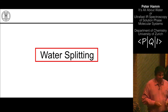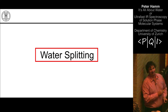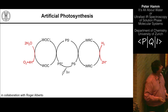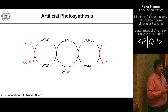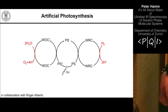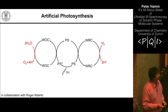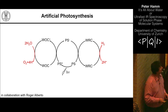With that I come to the second part, which is something completely different — about splitting water. This is relatively new work running under the name artificial photosynthesis. The idea is to construct a smart molecular system that allows splitting water by the absorption of light. This is a very fashionable field worldwide and could make a tremendous impact on our energy problems.